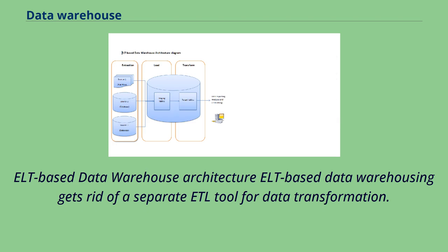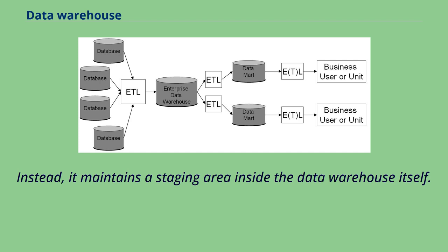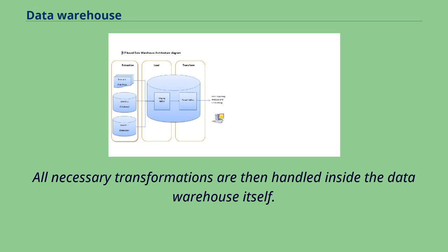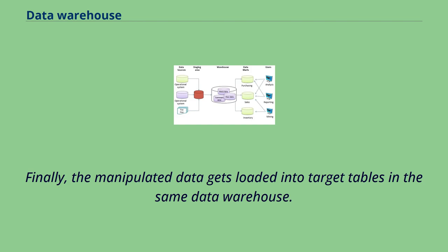ELT-based data warehouse architecture: ELT-based data warehousing gets rid of a separate ETL tool for data transformation. Instead, it maintains a staging area inside the data warehouse itself. In this approach, data gets extracted from heterogeneous source systems and are then directly loaded into the data warehouse before any transformation occurs. All necessary transformations are then handled inside the data warehouse itself, and finally the manipulated data gets loaded into target tables in the same data warehouse.